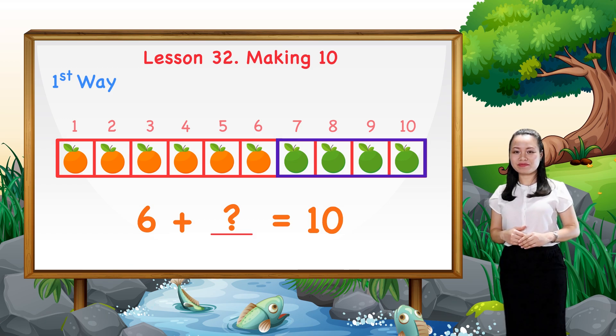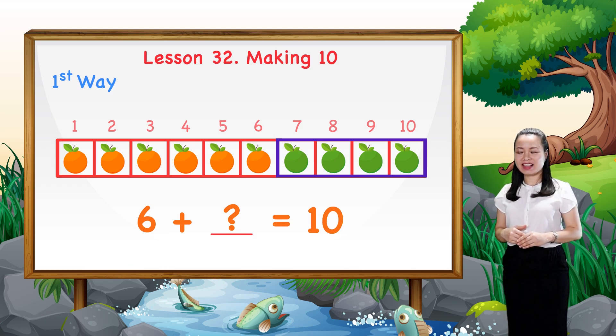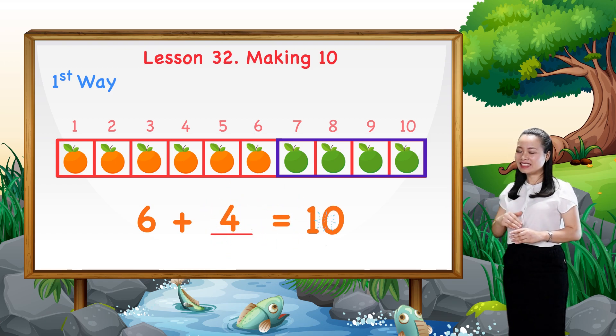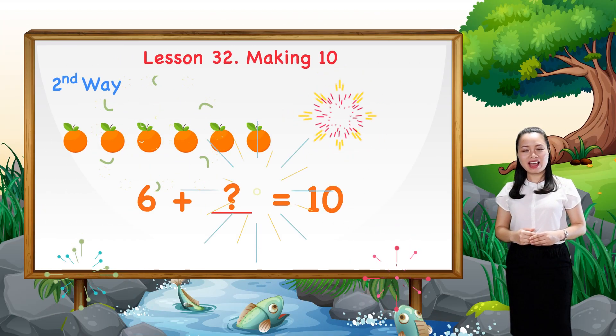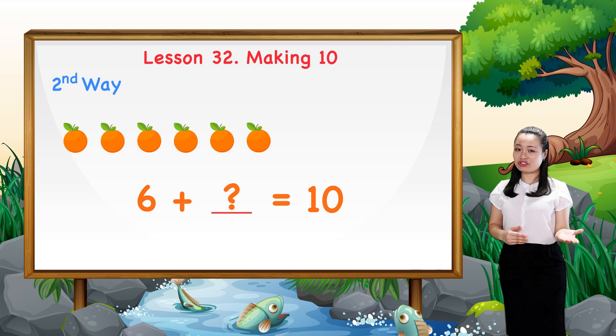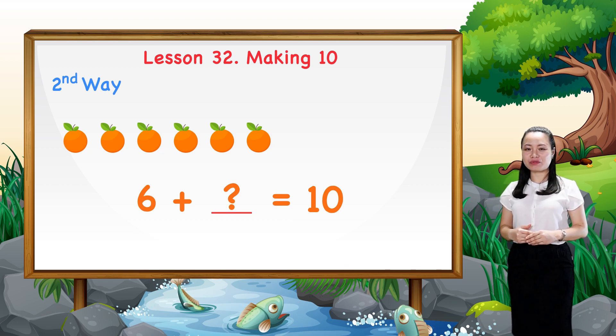Therefore, we have six plus four equals ten. The second way is, we can draw and count on more oranges until we get ten. Here, we already have six.